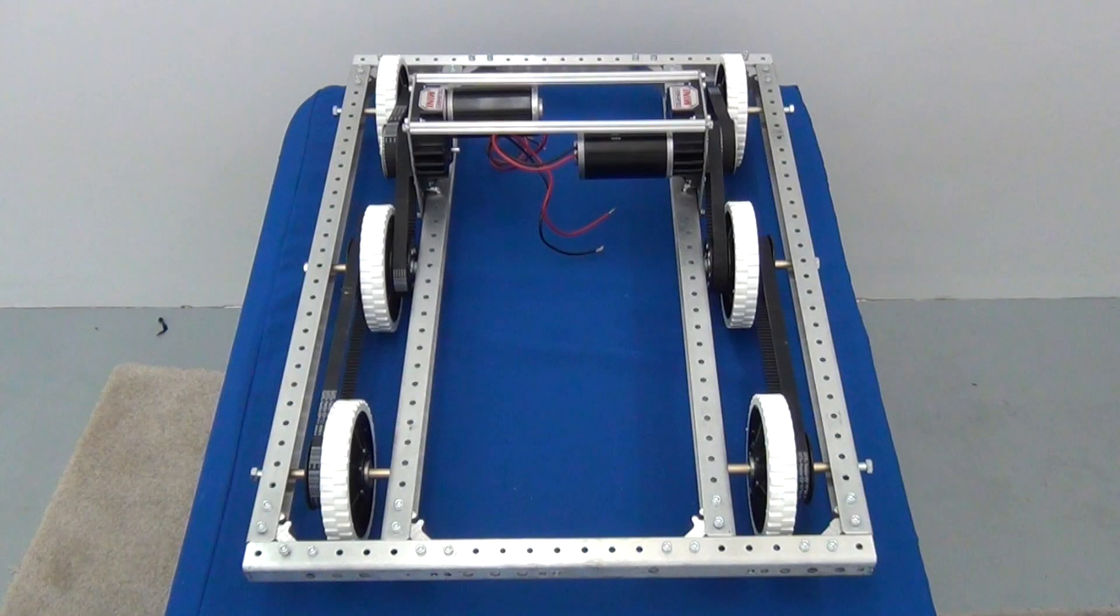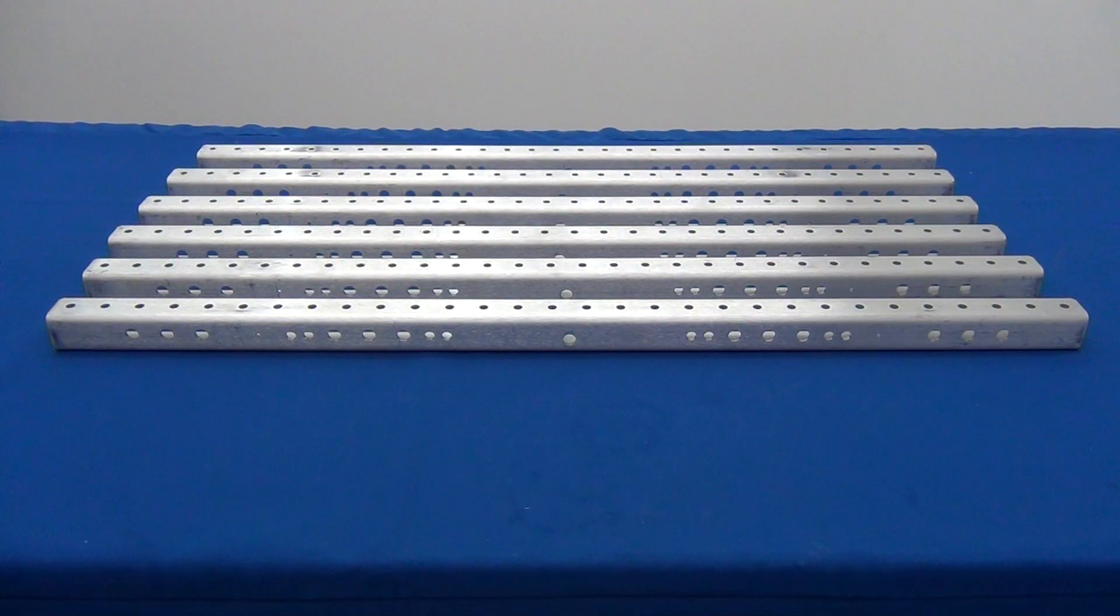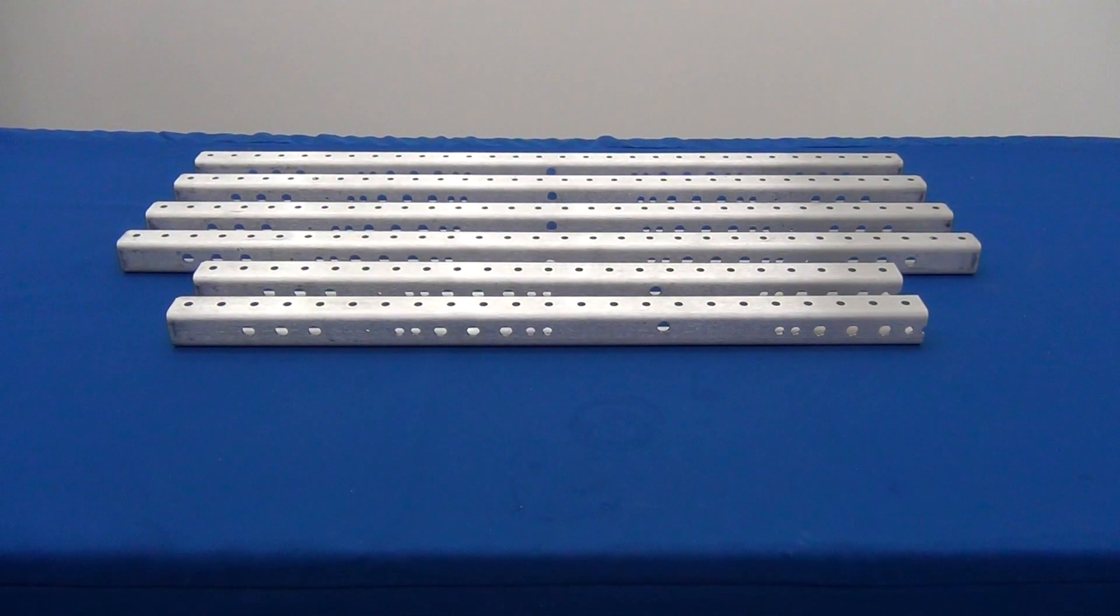So your team has decided to build a narrow base. The first thing we must do is cut the C channel. Cut two of the pieces to 23 inches.